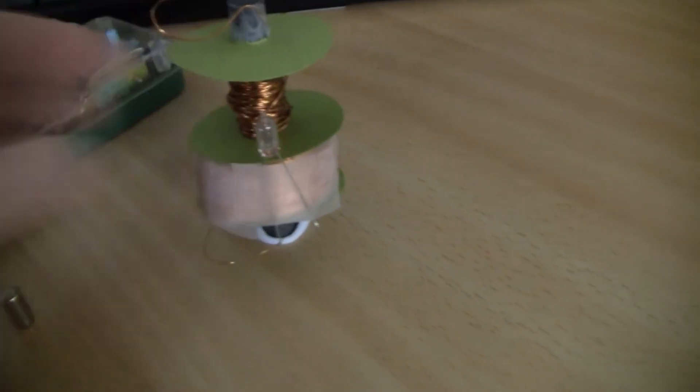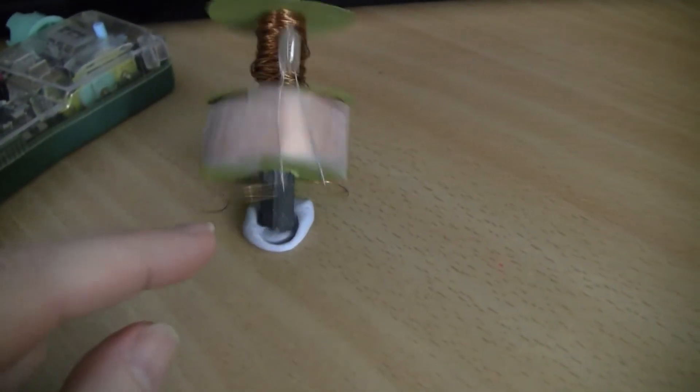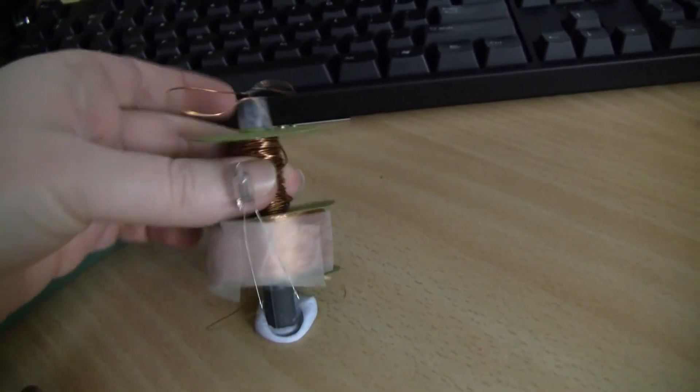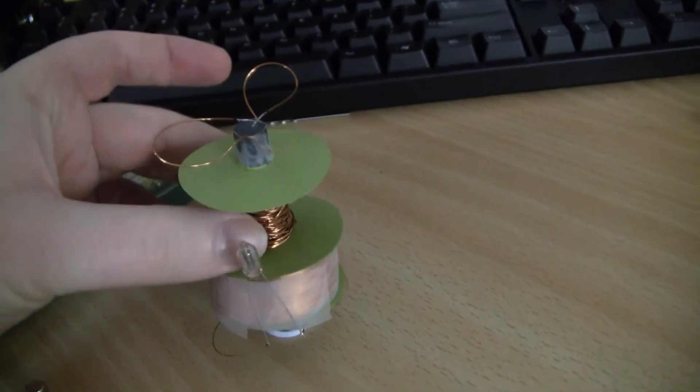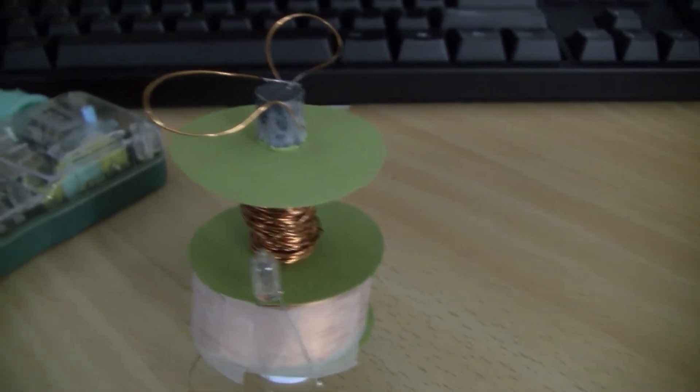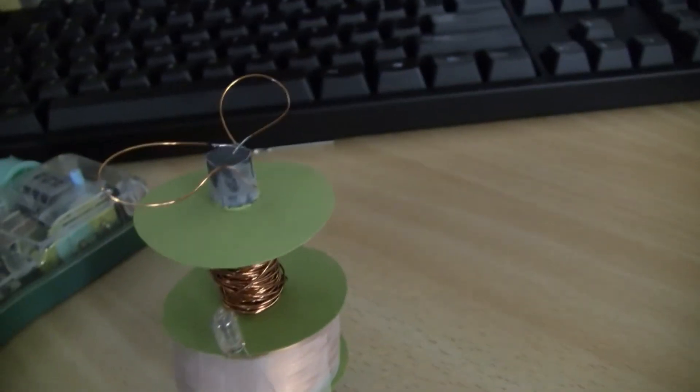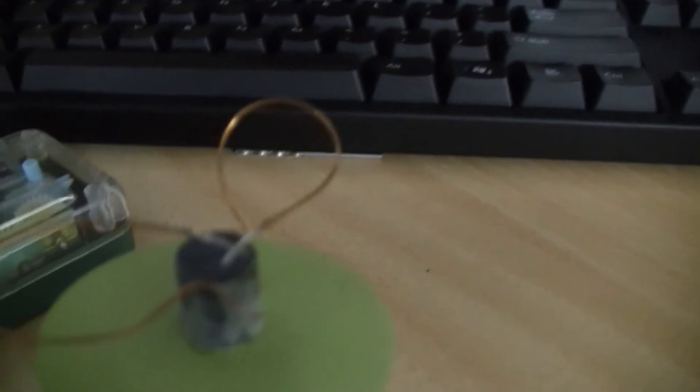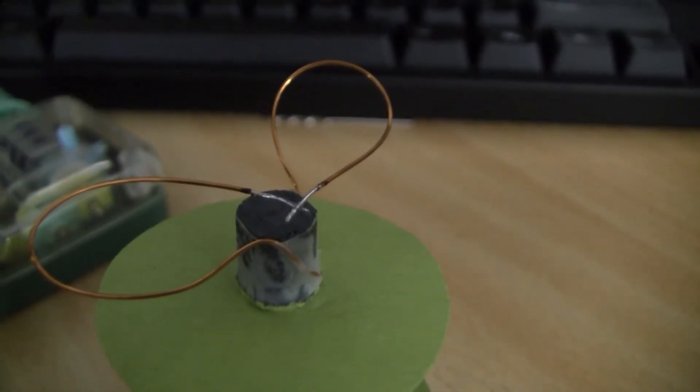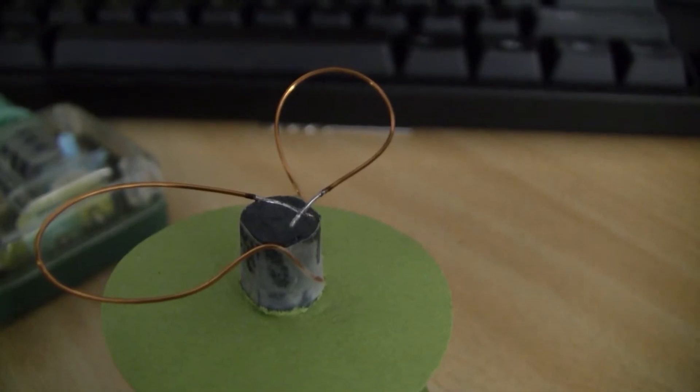Anyway, using that I wound 2,000 turns on the secondary here of reasonably thick wire. Not what I'd call really fine wire. You can see I put a neon bulb across it here for the demonstration. And the primary I didn't actually count - I think it's about 150 turns on the primary. I've trimmed the ends and as you can see here, I've just brought them into contact so they're touching each other, shorting the primary out.